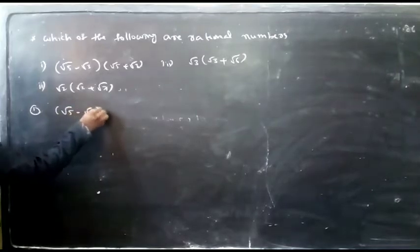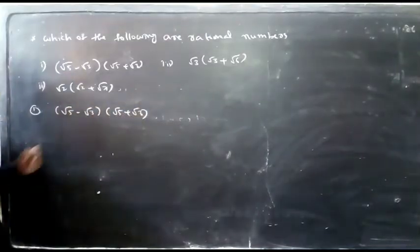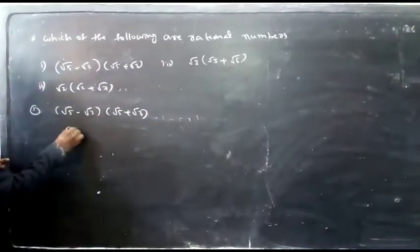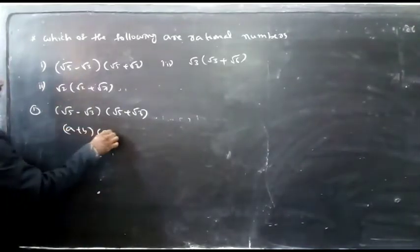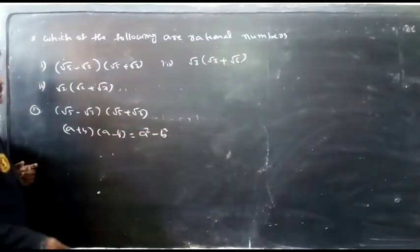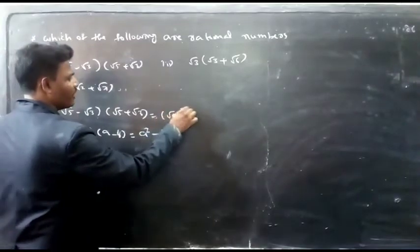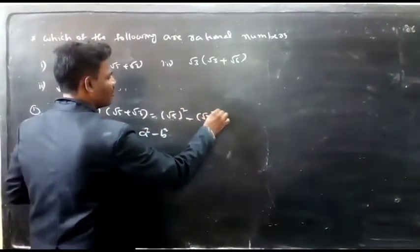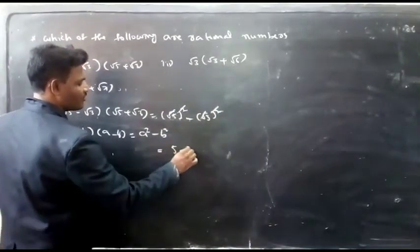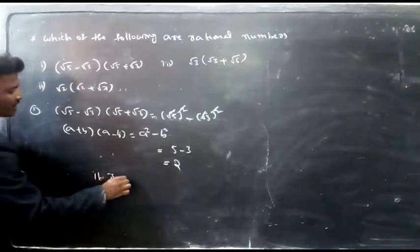Given: (√5 − √3)(√5 + √3). This is in the form (a + b)(a − b) = a² − b². So we get (√5)² − (√3)² = 5 − 3 = 2. It is a rational number.